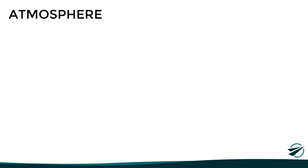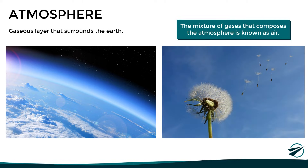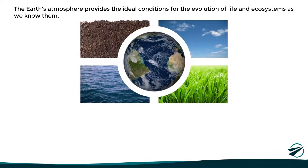As we mentioned in a previous video, the atmosphere is the gaseous layer that surrounds the Earth. It accompanies the planet in its rotation and translation movements, serving as a kind of protective layer between the surface and space. The mixture of gases that composes the atmosphere is known as air. The atmosphere plays a very important role in determining the environmental conditions of our planet, since it provides the ideal conditions for the evolution of life and ecosystems as we know them.